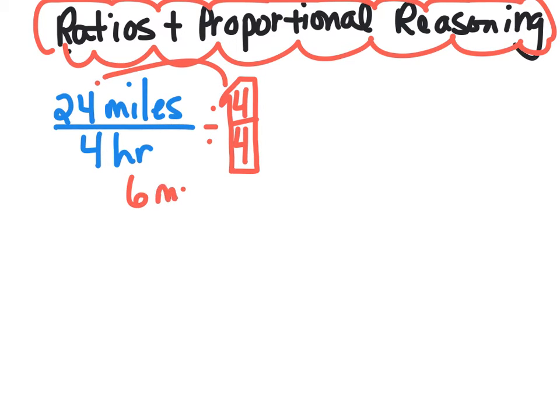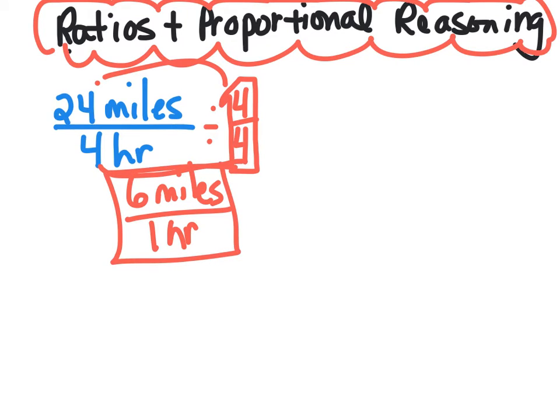Don't forget the labels, miles. And 4 divided by 4 is 1 hour. So that's the question. It's answered. How far did she go in 1 hour? Well, Andrea rode 6 miles in 1 hour.